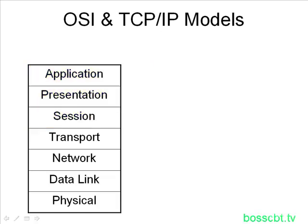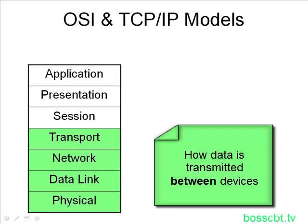The second group has to deal with the bottom four layers. When we group these together, all four of them are concerned with the networking portion between devices — in other words, how data is transmitted from one PC to another. So that's a very broad stroke of cutting up this model to distinguish two different groups.